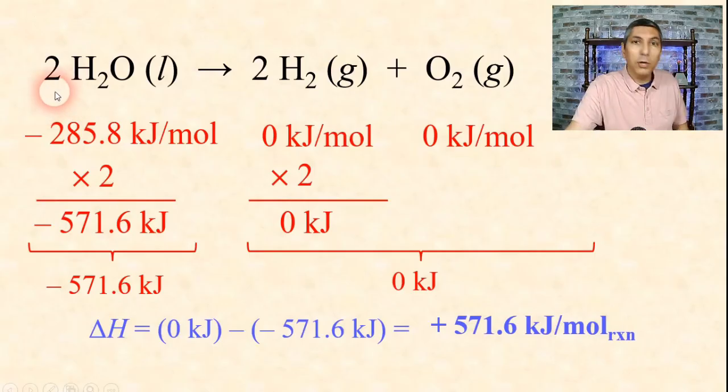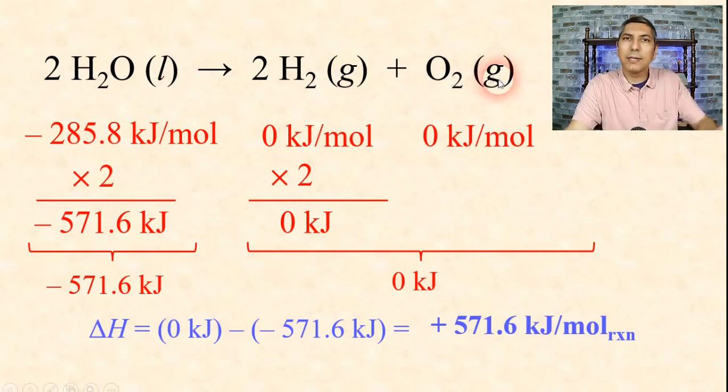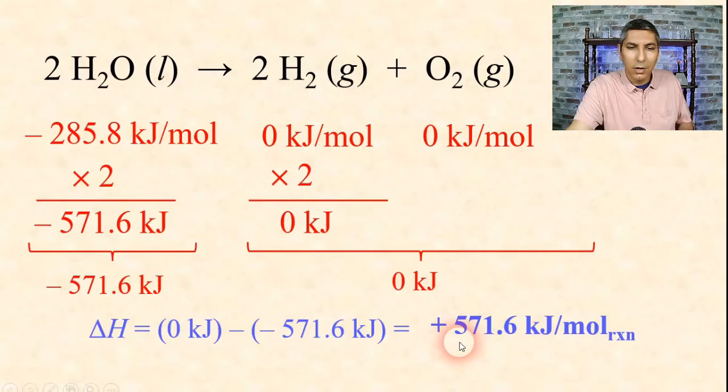Positive is endothermic, negative is exothermic. Basically, what this is telling us is that if you were to take 2 moles of water in its liquid state, you'd produce 2 moles of hydrogen gas and 1 mole of oxygen gas. And in the process of doing all that, the system would absorb 571.6 kilojoules of heat energy.